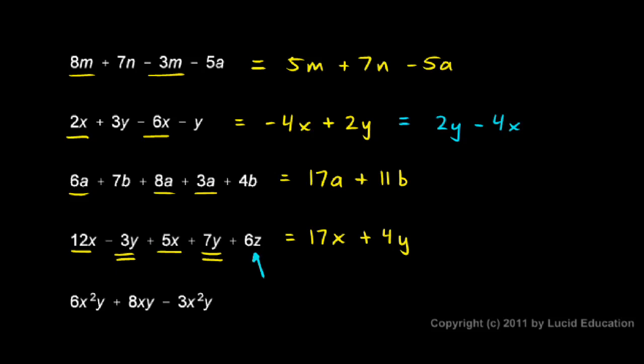And then I still have this 6z sitting there. There are no other z terms, so it can't be combined with anything. So I just leave it by itself. 17x plus 4y plus 6z. That's my answer.